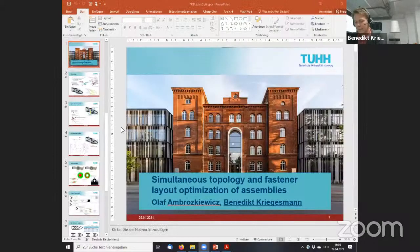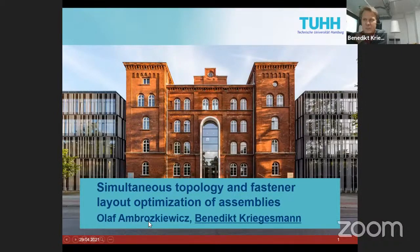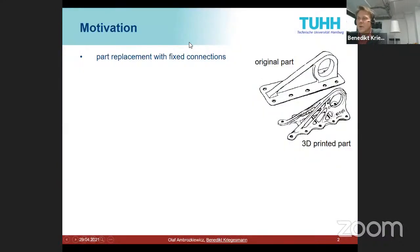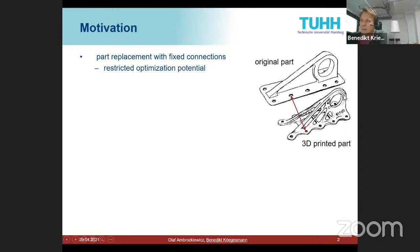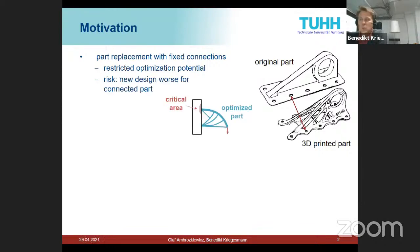My name is Benedict Krigisman and I'm presenting work mainly conducted by my PhD student Olaf Ambrosekiewicz, who is also here and can answer detailed questions. This talk is about assemblies. The motivation came from the first 3D printed flying part developed at Airbus — it replaced an existing part, so the connection was fixed, restricting design freedom. Also, optimizing a single part risks worsening the whole assembly.